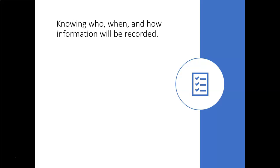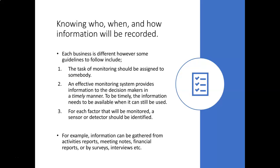Knowing who, when, and how information will be recorded. Each business is different; however, some guidelines to follow. Number one, the task of monitoring should be assigned to somebody. Number two, an effective monitoring system provides information to decision makers in a timely manner — the information needs to be available when it can still be used. Number three, for each factor that will be monitored, a sensor or detector should be identified. For example, information can be gathered from activities, reports, meetings and notes, financial reports, or surveys and interviews.